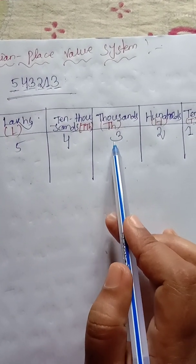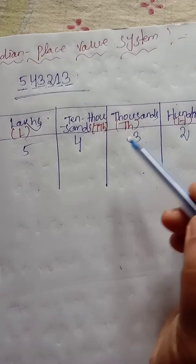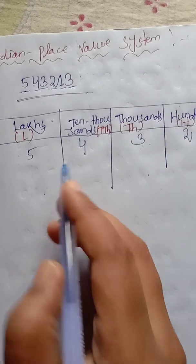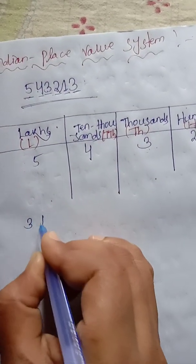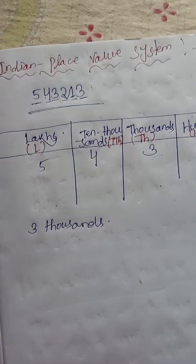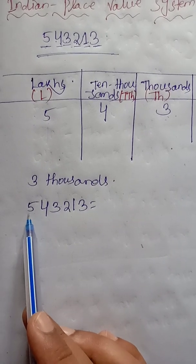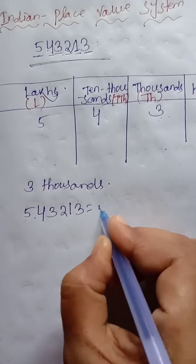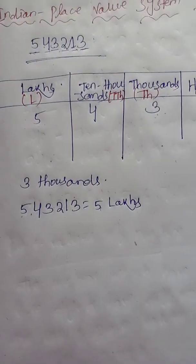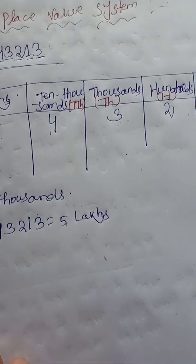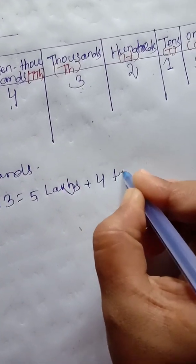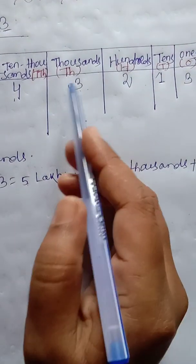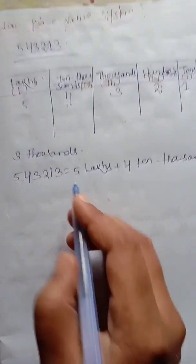Suppose someone asks: what is the place value of 3? First, you see which place 3 is in. 3 is in the thousands place. So the place value of 3 is 3,000. Now let us write the place values of all the digits. 5 is in the lakhs place, so its place value is 5,00,000. 4 is in the ten-thousands place, so we write 4 ten-thousands, which is 40,000. 3 is in the thousands place, so we write 3,000.